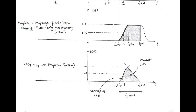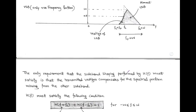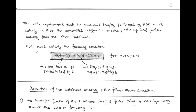Regarding the design of the sideband shaping filter, the only requirement is that the transmitted vestige compensates the spectral portion missing from the other sideband. To satisfy this requirement, the transfer function H(F) must satisfy the condition: H(F + Fc) + H(F − Fc) = 1 for frequencies between minus W to W.